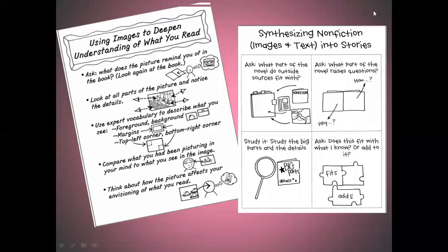Readers, here are some charts that have questions we can use when we're doing additional research to help us in our historical fiction. We can use images to deepen our understanding of what we read. What does the picture remind you of in the book? Make sure we look at all of the parts of the picture — we want to notice the foreground, the background, the margins, the corners, analyzing and searching for every little detail. Compare what you're seeing in the real image or primary resource to what you see in your own mind as you were reading. Then think about how will this picture affect your envisioning of what you read in the future.